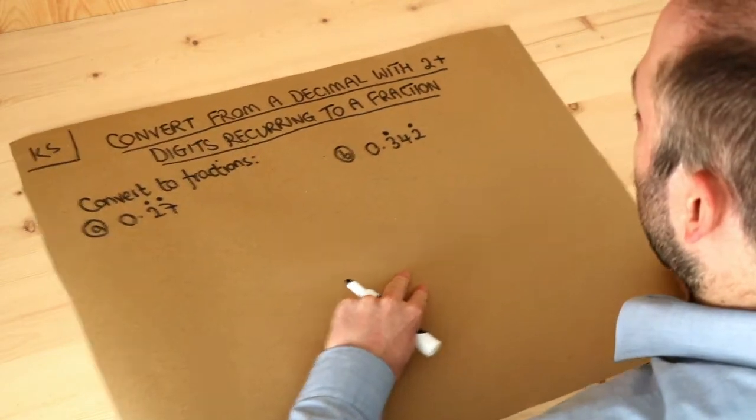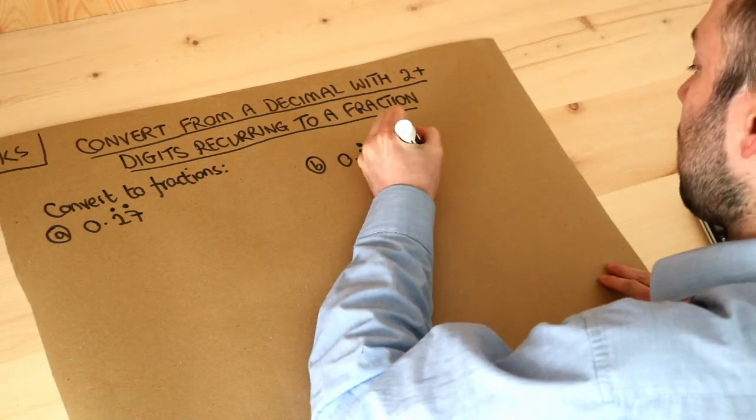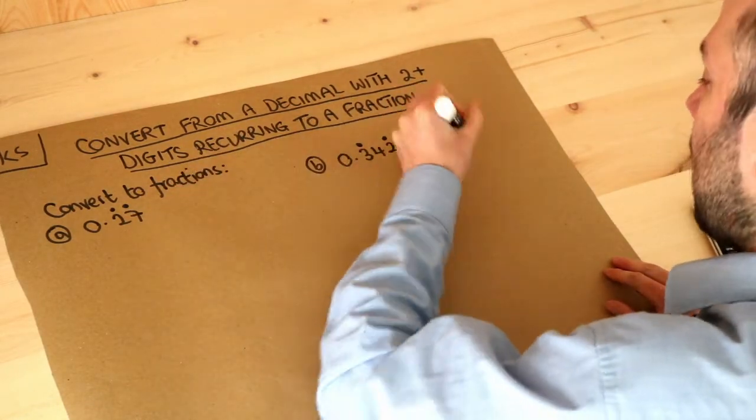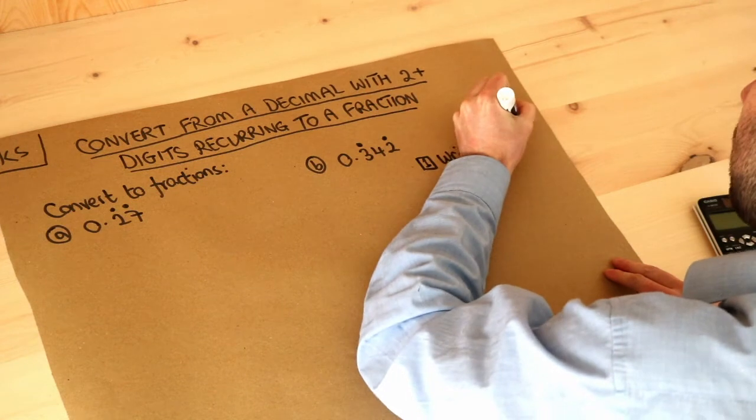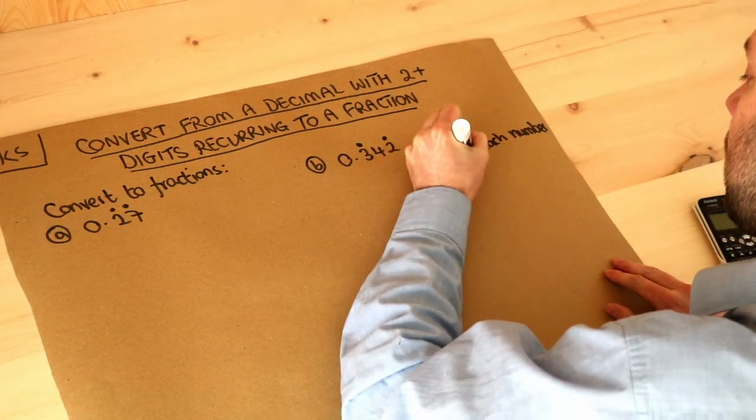Now the steps are this: firstly we call each of these x, so we write each number as x and we write the digits repeating, I'll explain what I mean by that in a second with the repeating digits.